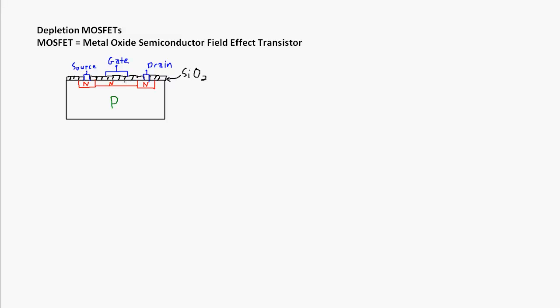One thing to note about the silicon dioxide layer is it's very static sensitive. When handling discrete MOSFET devices, it's important to take some ESD precautions so that we don't blow out the silicon dioxide and essentially short the gate to the rest of the transistor.